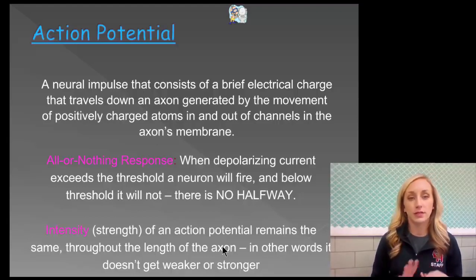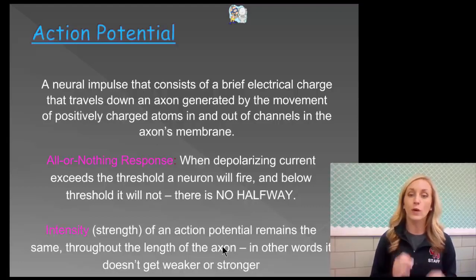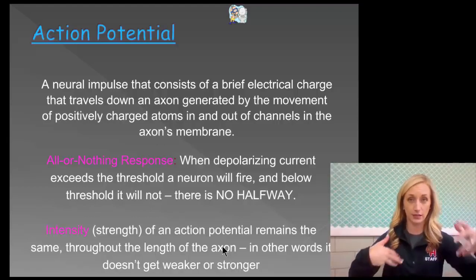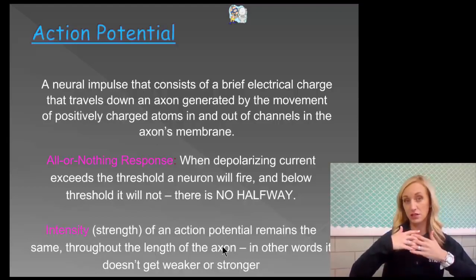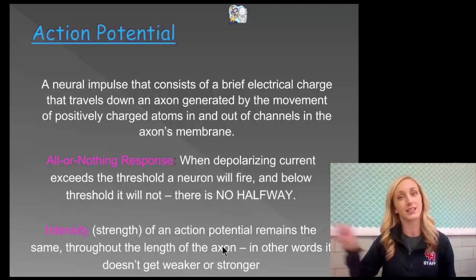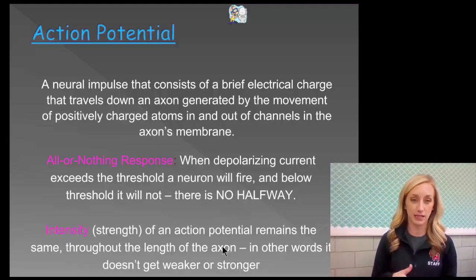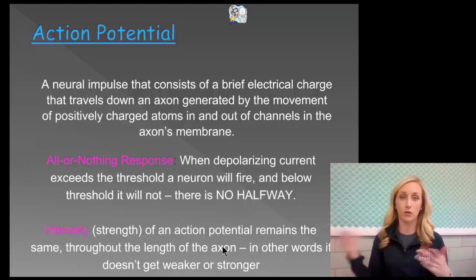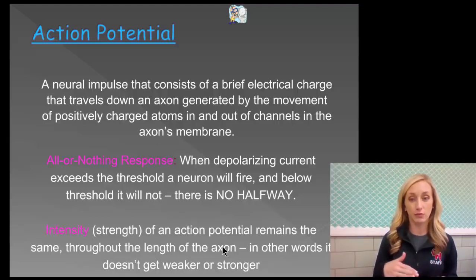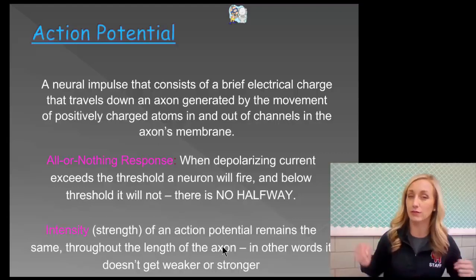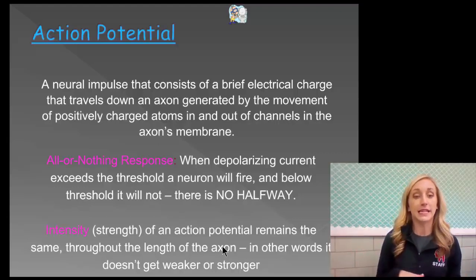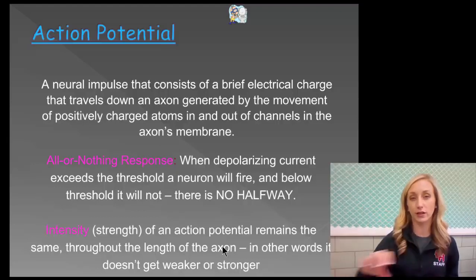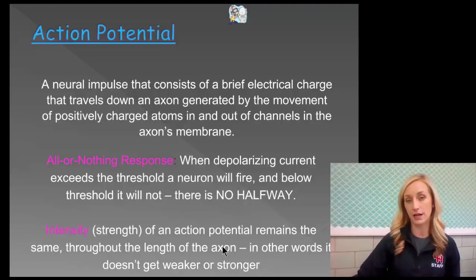A couple of principles to understand with action potential. The all-or-nothing response: when depolarizing current exceeds the threshold, a neuron will fire. Below the threshold, it will not. There is no halfway point — it's either going to fire all the way or not at all. The intensity or strength of an action potential remains constant throughout the length of the axon; it doesn't get weaker or stronger as it goes down. It remains constant.